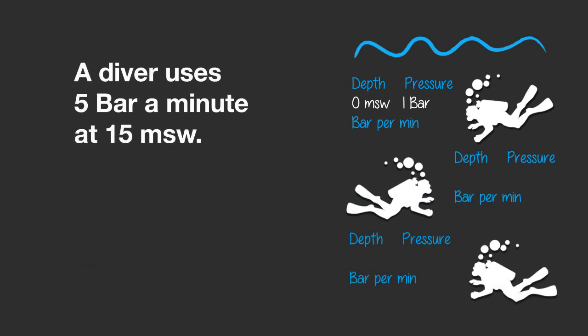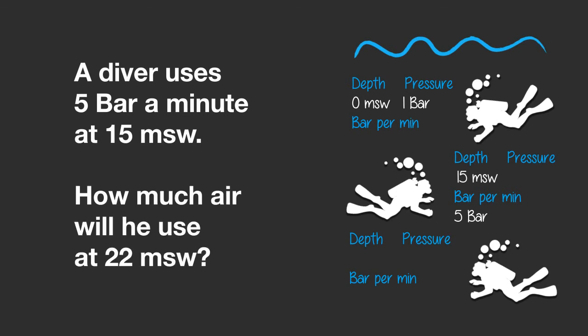Now let's take the next step and calculate how much air a diver uses at different depths. A diver uses 5 bar a minute at 15 metres of seawater. How much air would he use at 22 metres of seawater?